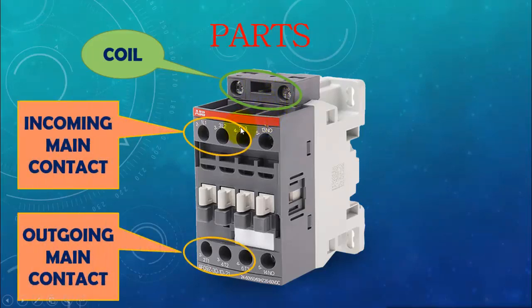Another main part of the contactor is the main terminal or the main contacts of the contactor. The incoming main contacts are labeled as L1, L2 and L3. Similarly, the outgoing main contacts through which any electrical machine is connected are labeled as T1, T2 and T3 and this is a common standard. You will find this label on different manufacturers' contactors.